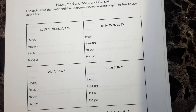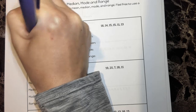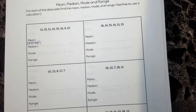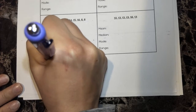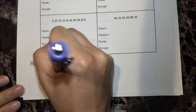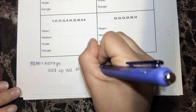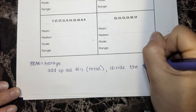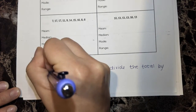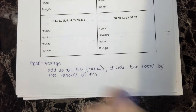So let's start with mean. Mean is your average — it is what the average number that occurs is. To find your mean, you add up all the numbers to find your total, and then you divide the total by the amount of numbers. That will make more sense once we start doing it.